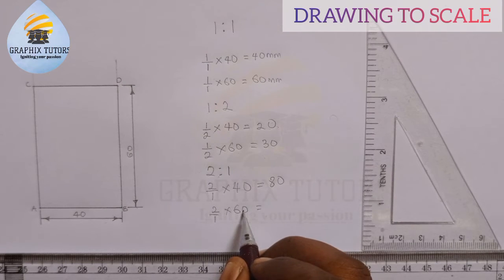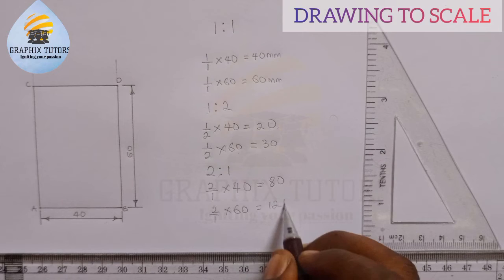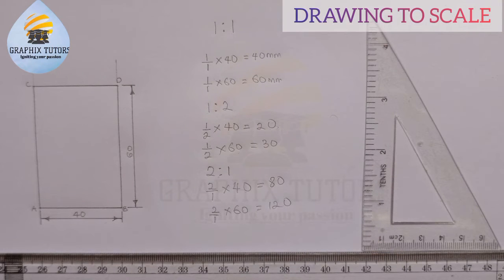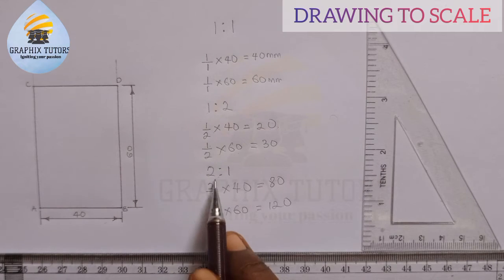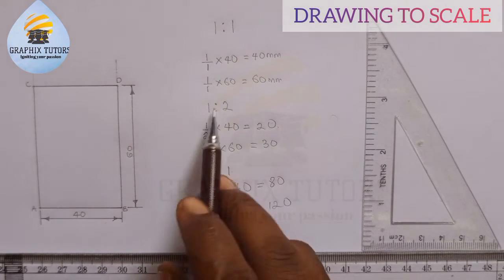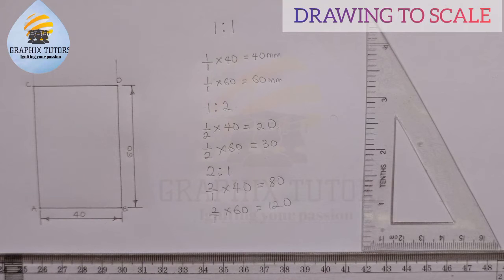So what it means is twice the size. So when you see two is to one means twice the size. One is to two means half the size.